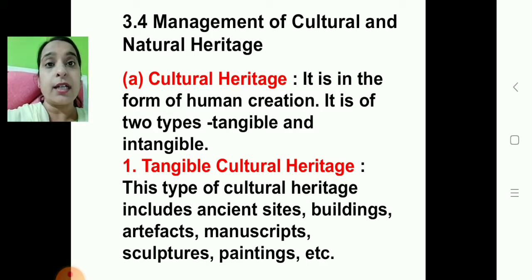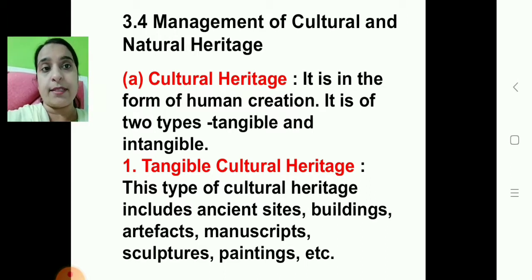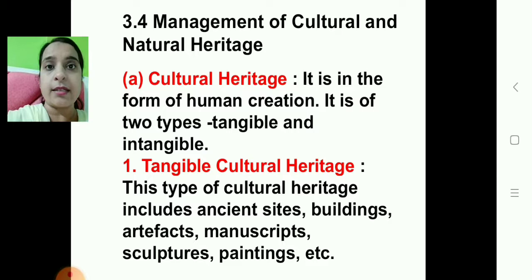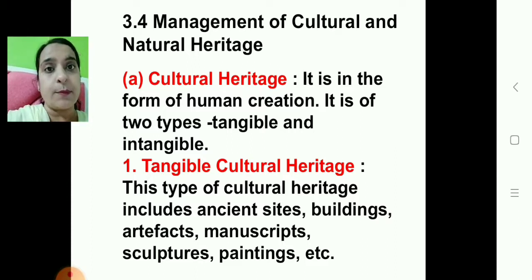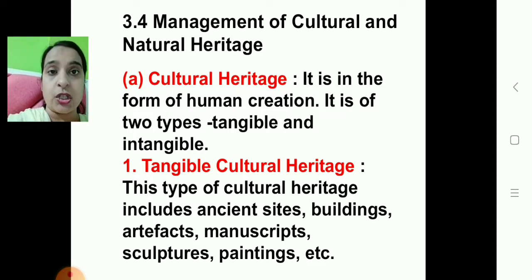Cultural heritage is in the form of human creation. It is of two types: tangible and intangible. Tangible cultural heritage means what you can see and what you can touch. This type of cultural heritage includes ancient sites, buildings, artifacts, manuscripts, sculptures, paintings, etc. This you can see and touch — that is tangible cultural heritage.